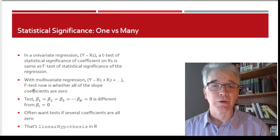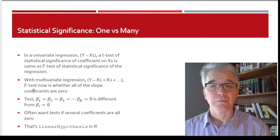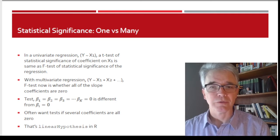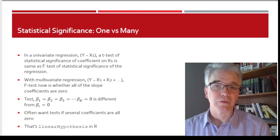In the univariate regression, we just have y regressed on x1, then the t-test on significance is the same as the f-test that says, are all the x variables jointly different from zero because all of them is the one of them.